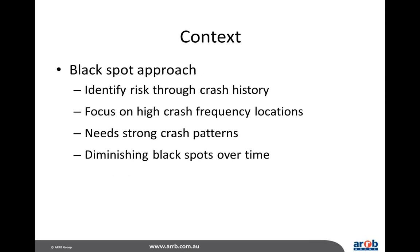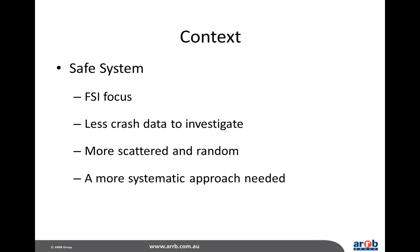The traditional approach has been to identify crash risks through crash history. However, black spots are diminishing over time. Only a third of fatal crashes occur at black spots, and more than half of fatal crashes occur at new locations where no previous crash has been recorded. The black spot approach needs strong crash patterns and focuses on locations that experience high crash frequencies, which means there's limited opportunity to treat crashes dispersed across a network, such as on local or rural roads. Additionally, with the safe system focus on severe crashes, there is less data to investigate, and these severe crashes tend to be more scattered and random across the network.